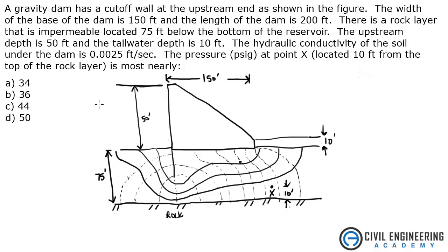It says a gravity dam has a cutoff wall at the upstream end as shown in the figure. Here's a cutoff wall. The width of the base of the dam is 150 feet, and the length of the dam is 200 feet.